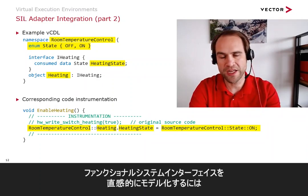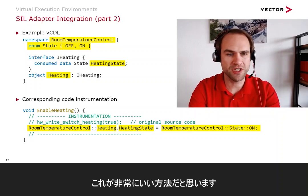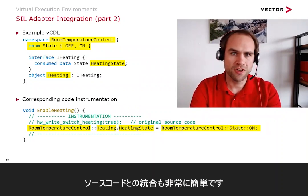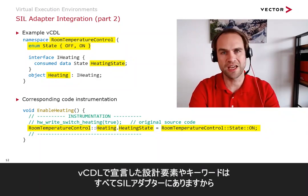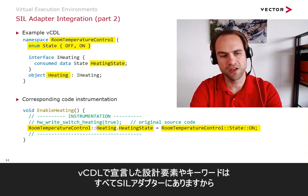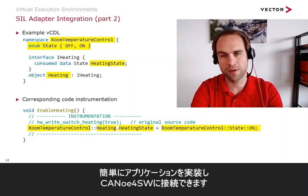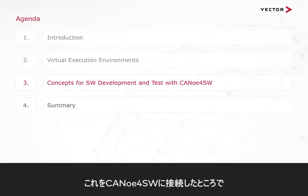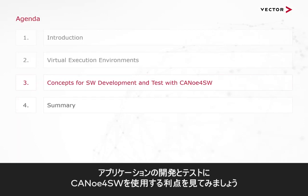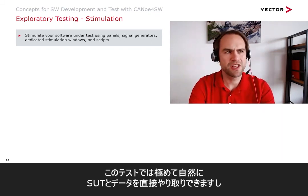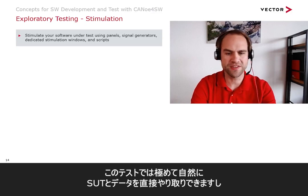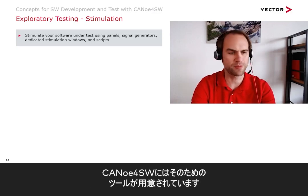I think this is a quite intuitive way to model your functional system interfaces. It's also fairly easy to integrate with your source code because you find all the artifacts and keywords you declared in the VCDL reflected in the SIL adapter. So you can easily instrument your applications and connect them to Canoo for Software. Now that we've connected to Canoo for Software, let's see what the benefits are of employing it for development and testing. One cool feature is what we call exploratory testing, where you can interact in a natural way directly with your SUT — and Canoo for Software offers quite a few tools for that.